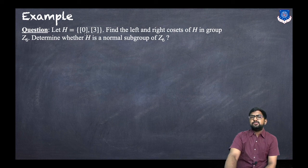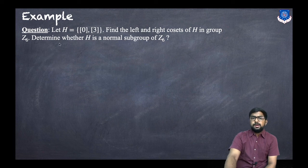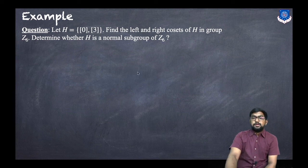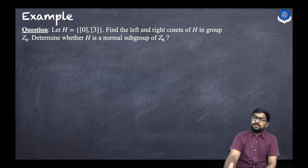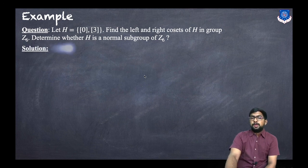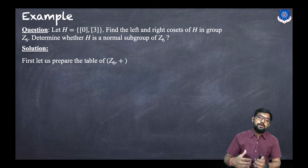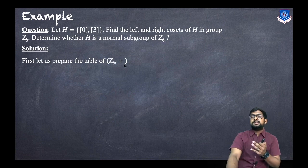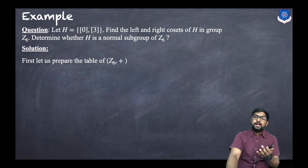Let H = {0, 3}. Find the left and right cosets of H in the group Z6 — this type of problem we already did in a previous session — and determine whether H is a normal subgroup of Z6 or not. For a normal subgroup, we need to find the left and right cosets, and if both are the same we can conclude it is a normal subgroup.